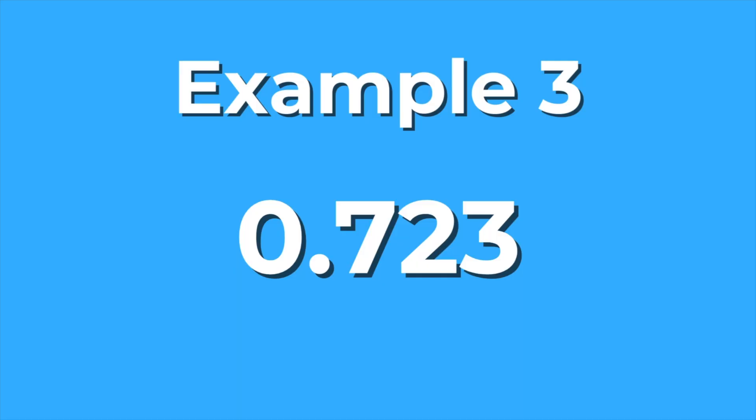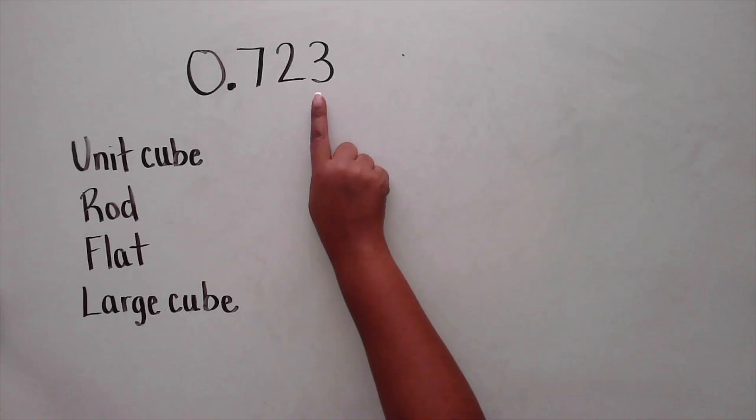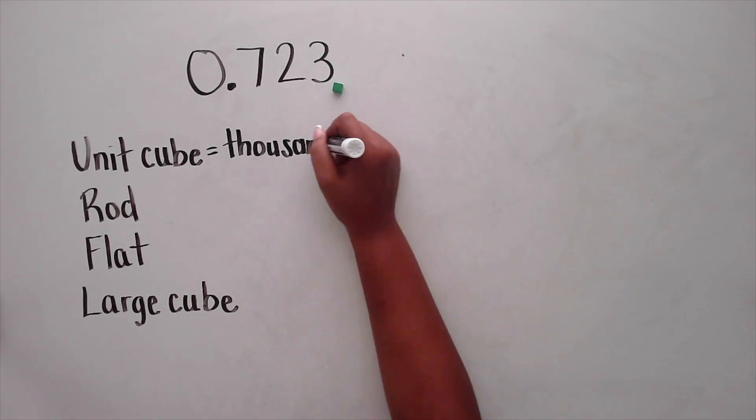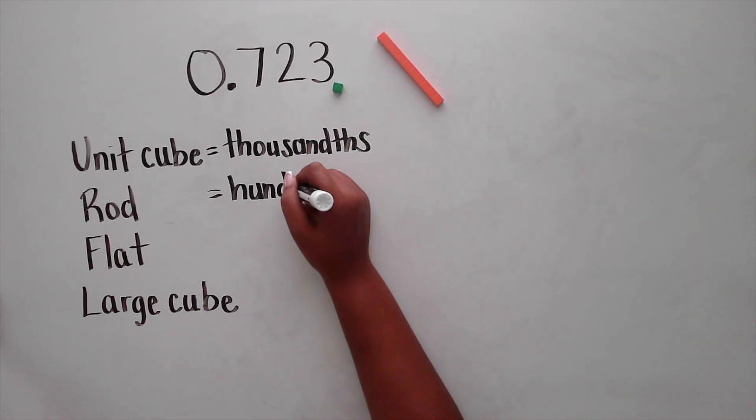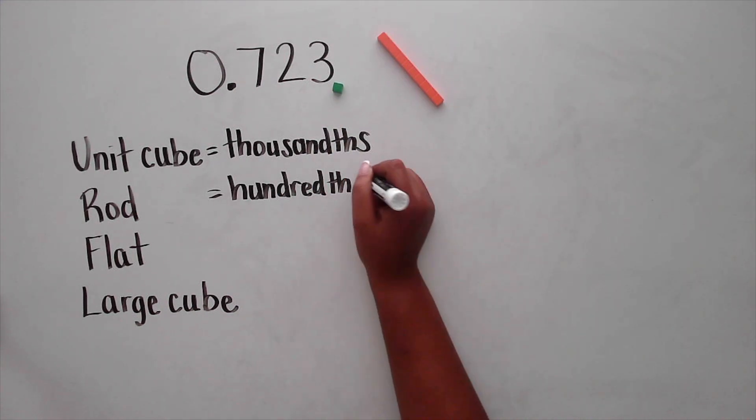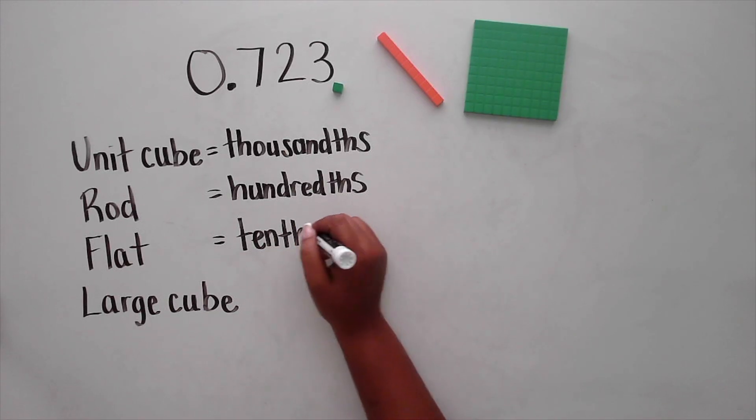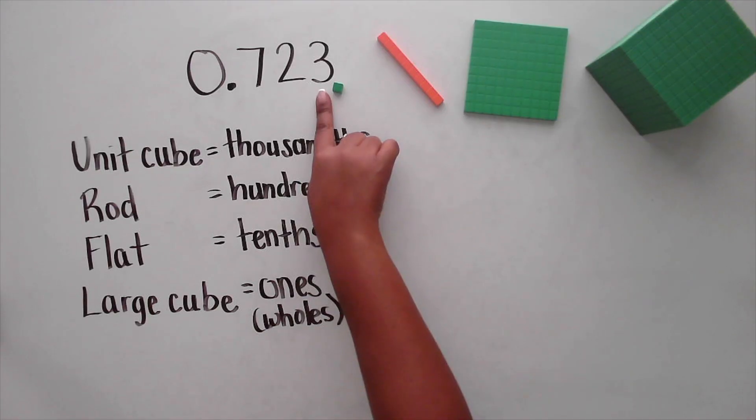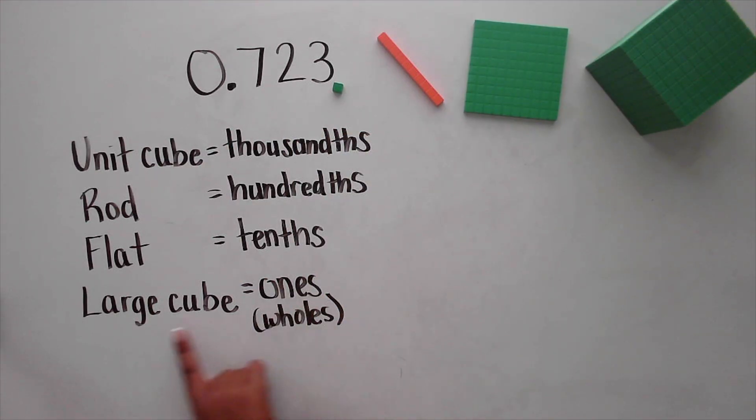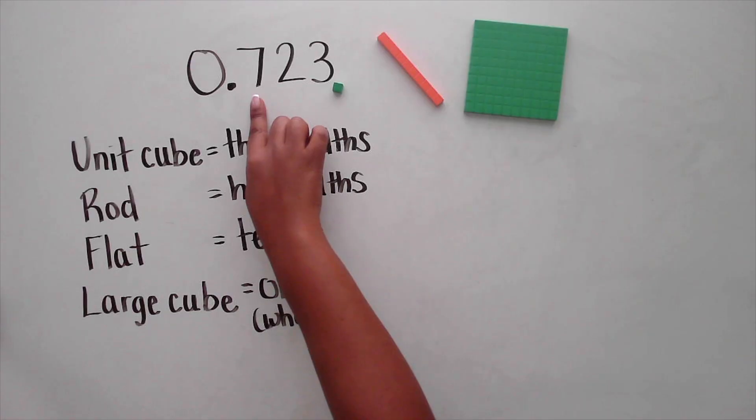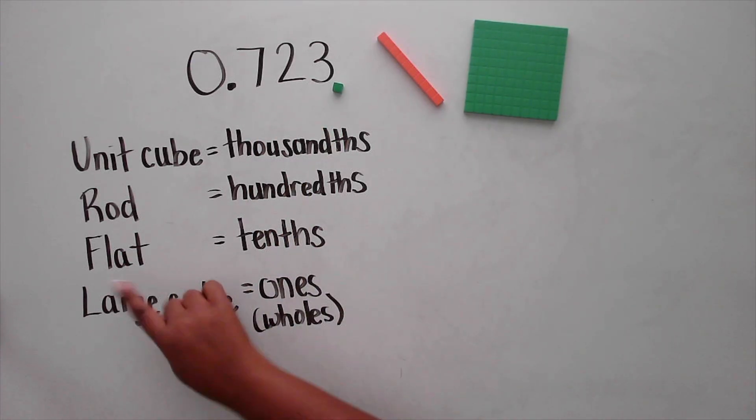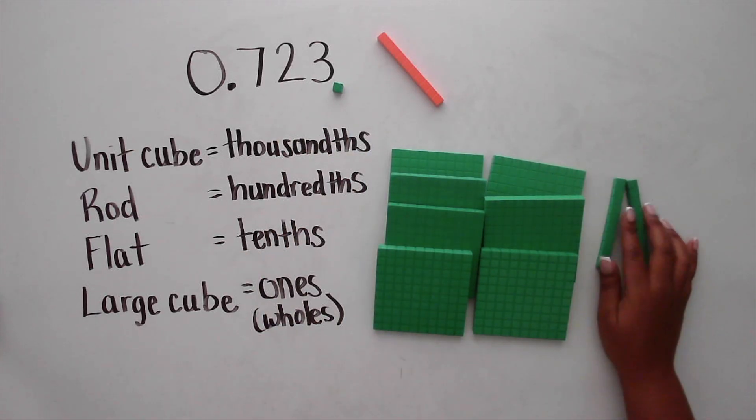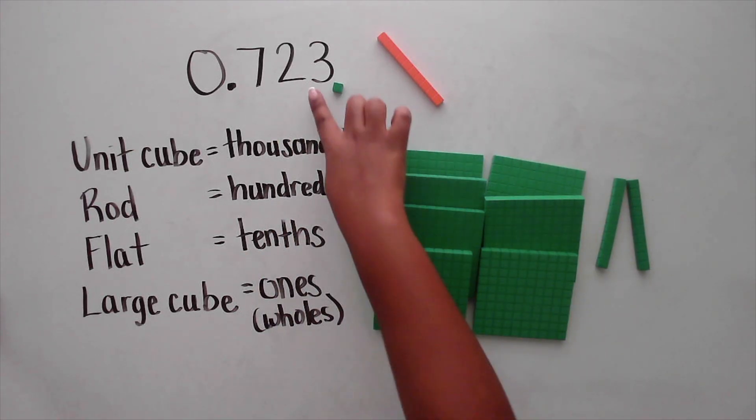In our last example, 723 thousandths, the final digit is in the thousandths place. So this time, the unit cube represents the thousandths, the rod represents hundredths, the flat can represent tenths, and the large cube can represent the ones. 723 thousandths has 0 ones, 7 tenths, 2 hundredths, and 3 thousandths.